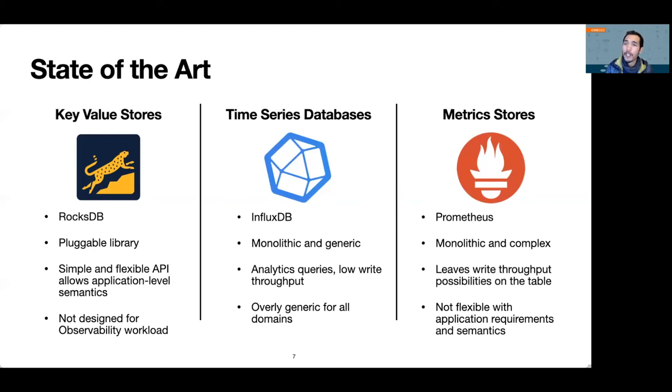Currently, the industry has coalesced around Prometheus, a monolithic metric store designed for observability. Although Prometheus is faster than its current alternatives at ingesting data, its design decisions like supporting only univariate sources and contention in its write path presents severe limitations on its write throughput.